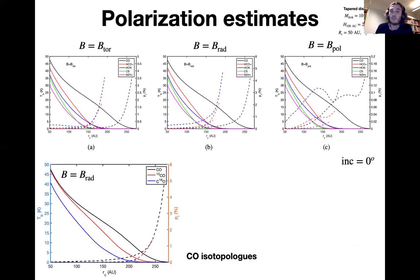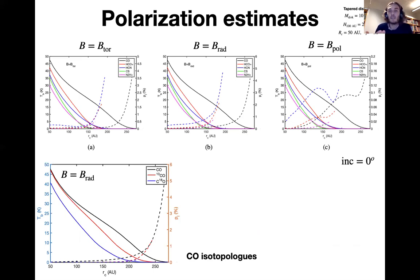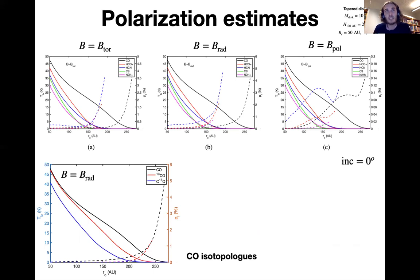Turning now to CO's isotopologues, we note that the much less abundant 13CO and C18O have consistently lower polarization estimates compared to regular CO. This is because their emission comes from deeper down in the disk, where densities are higher and alignment is quenched by collisions.